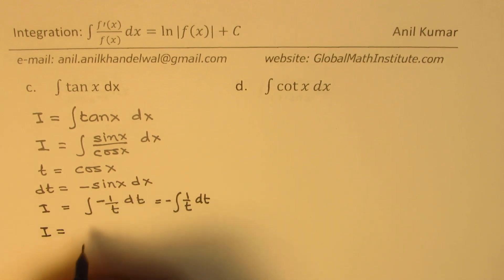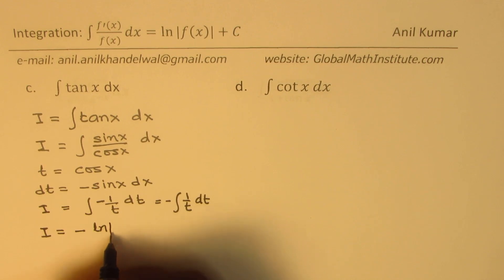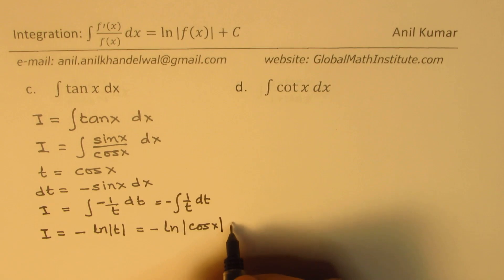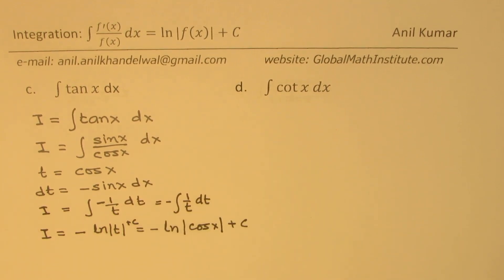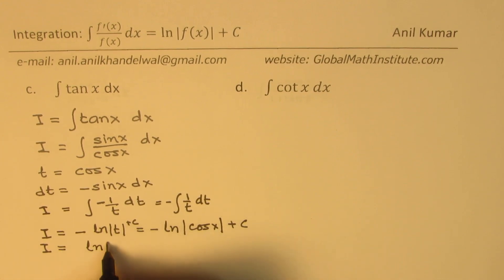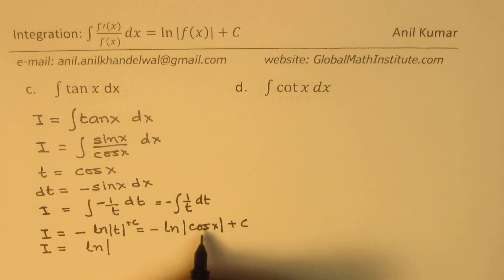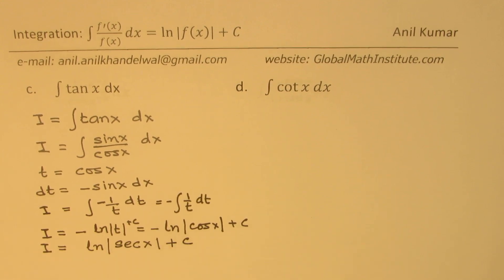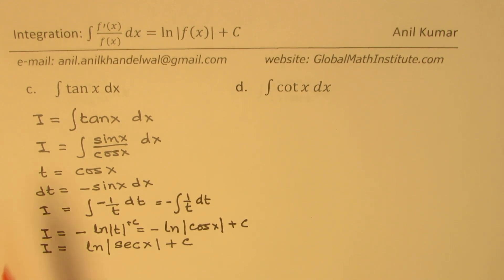This gives us -ln|t| + c, and substituting back, -ln|cos x| + c. The negative sign means cos to the power of -1, so we can write this as ln|1/cos x| + c, which is ln|sec x| + c. Therefore the integral of tan x is ln|sec x| + c.